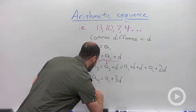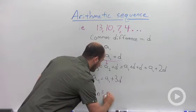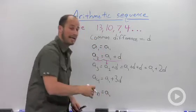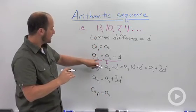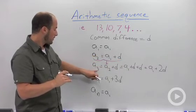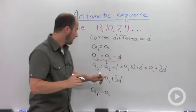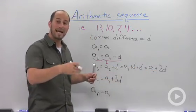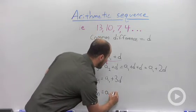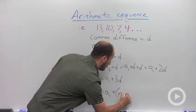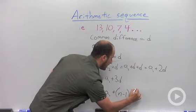What we can do then is just basically make a statement for a sub n. a sub n is going to be the first term plus, and if you notice, for the second term we added 1d, for the third term we added 2ds, for the fourth term we added 3ds. We're always adding one less d than the term number. So all we're doing for this is adding n minus 1 times d.